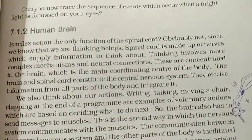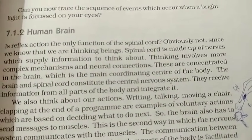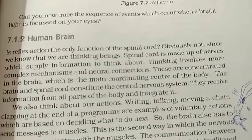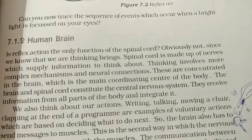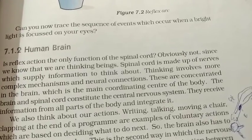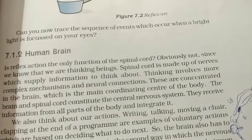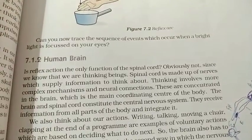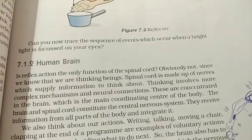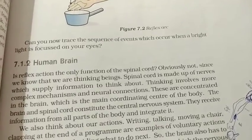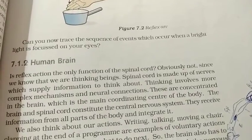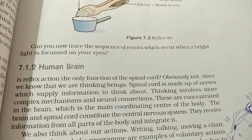Is reflex action the only function of the spinal cord? Obviously not, since we know that we are thinking beings. The spinal cord is made up of nerves that supply information, but thinking involves more complex mechanisms and neural connections. These are concentrated in the brain, which is the main coordinating center of the body. The brain and spinal cord constitute the central nervous system and receive information from all parts of the body and integrate it.